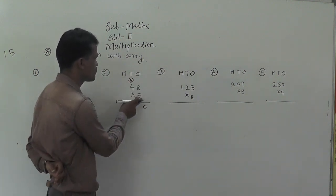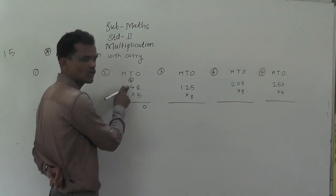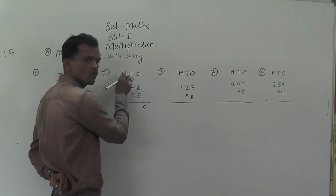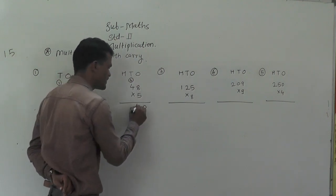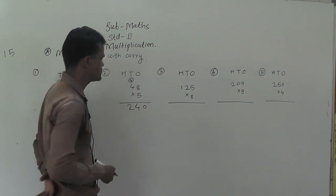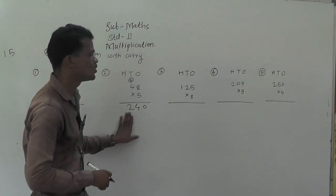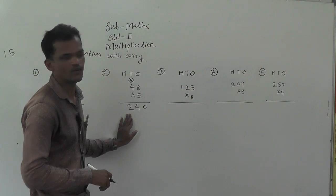Now, 5 times 4 is 20, 20 plus 4 carry equals 24. So the answer, or the product, is 240.